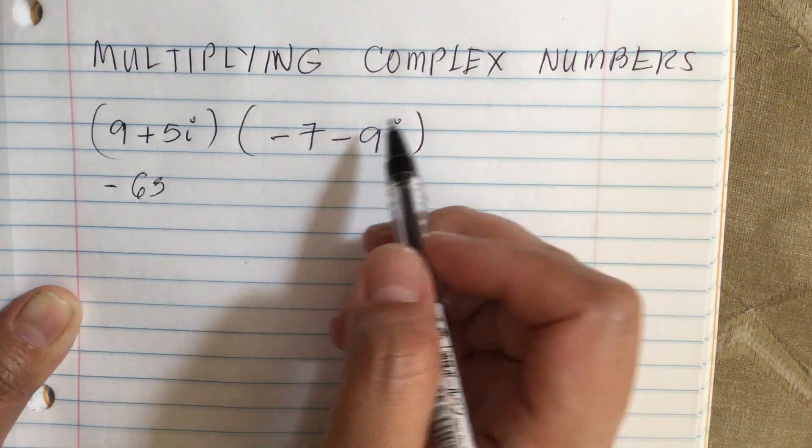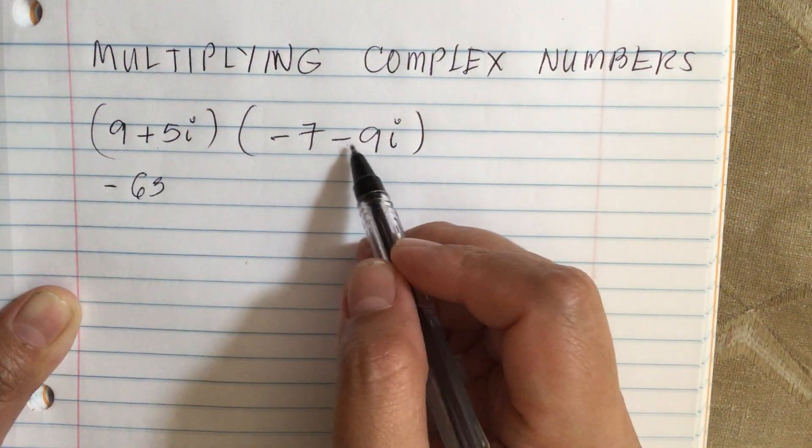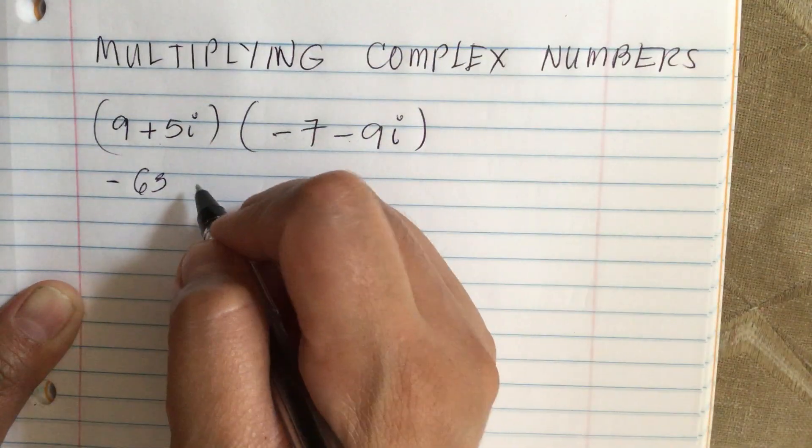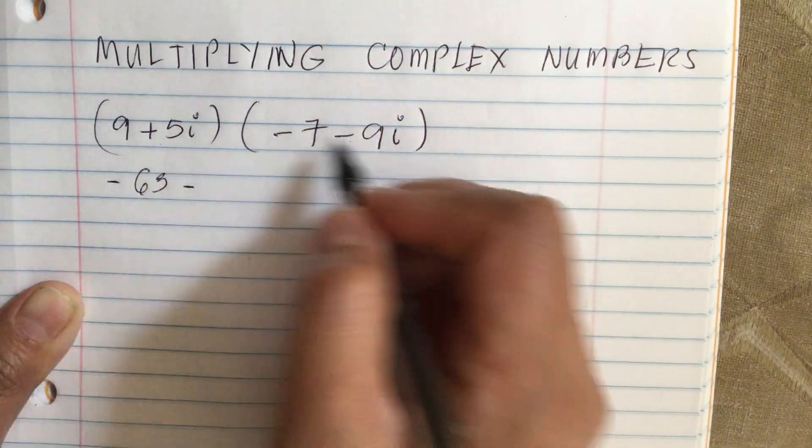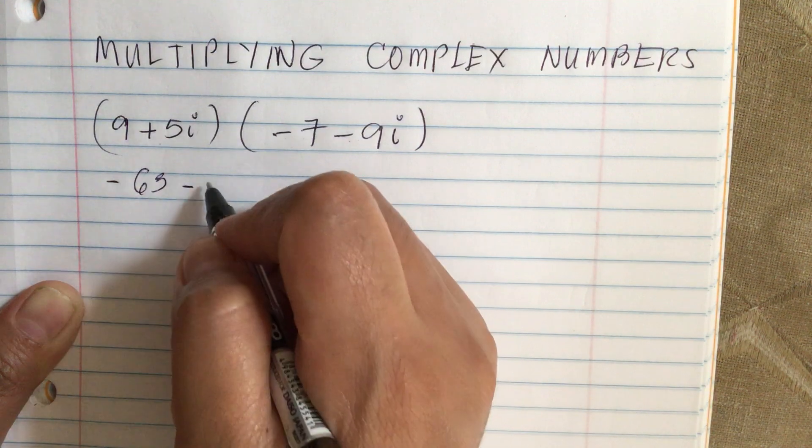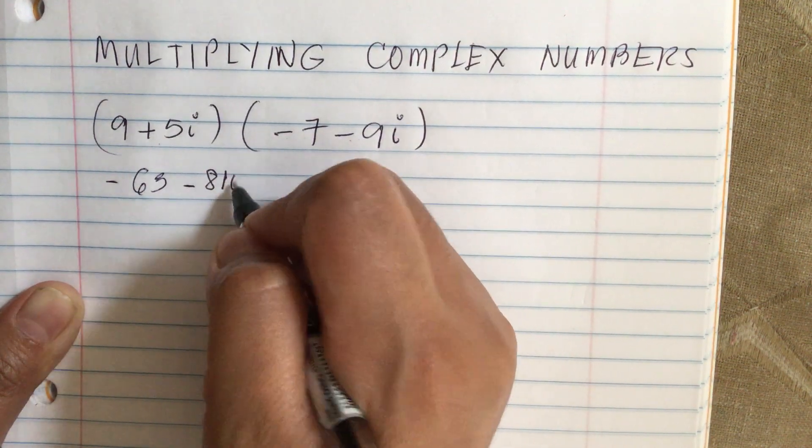Then the outside terms: we have 9 times minus 9i, which is minus 9 times 9 is 81, so minus 81i.